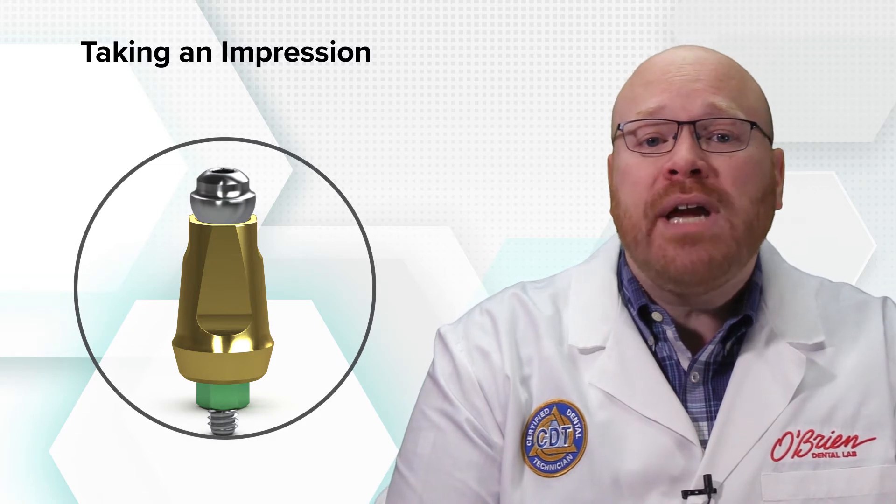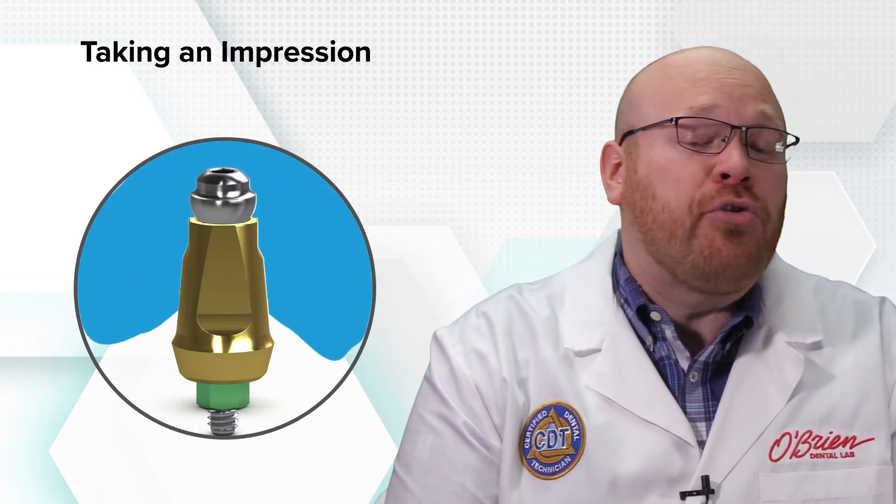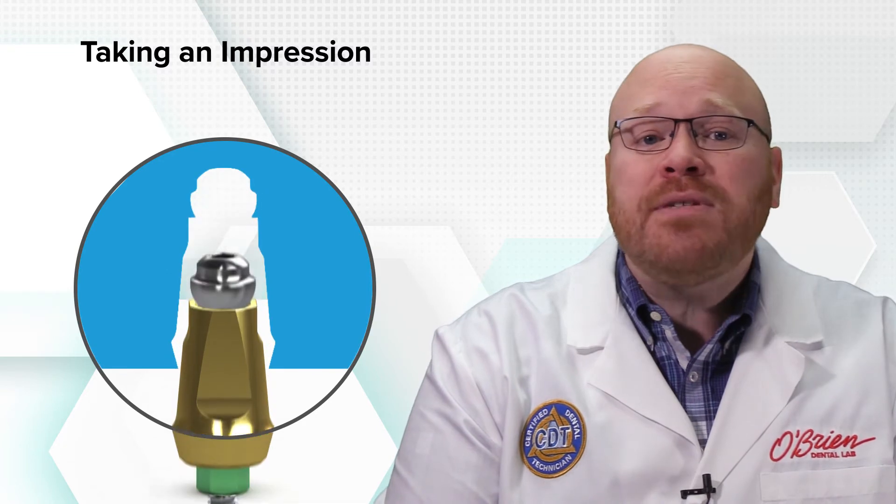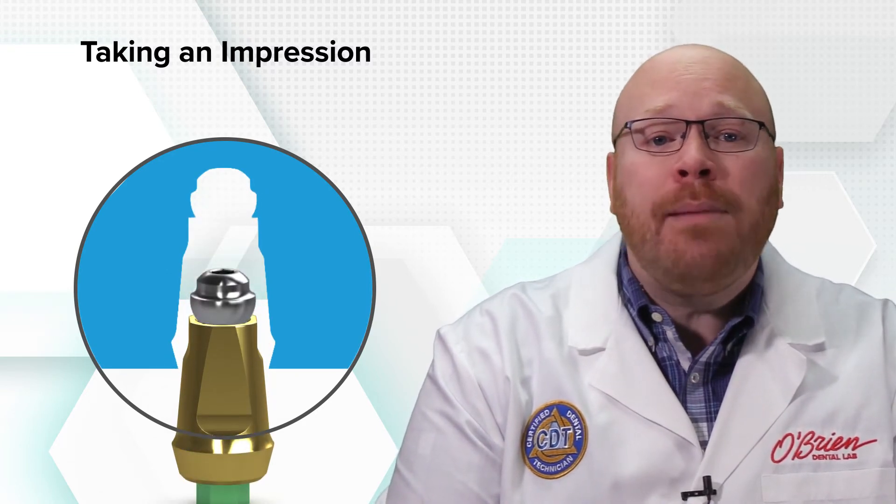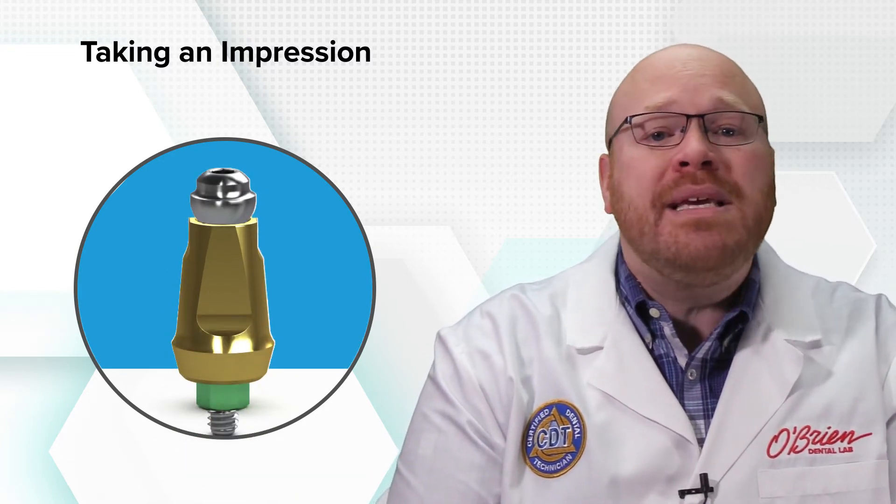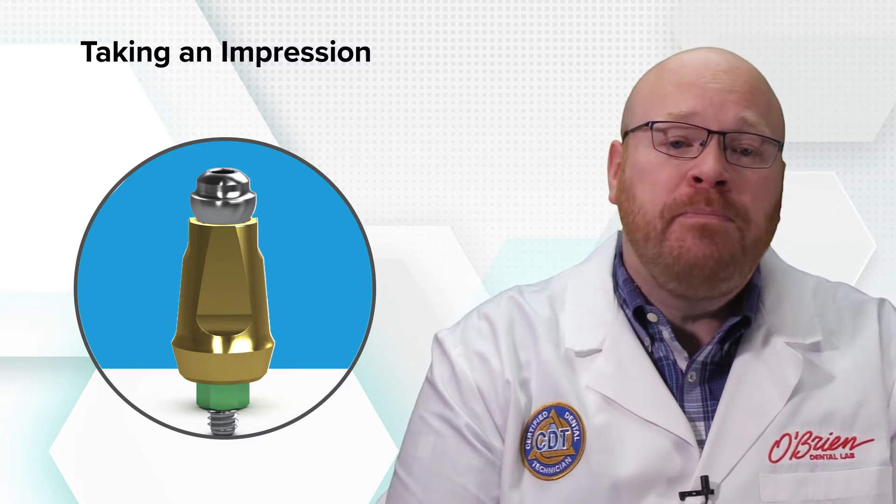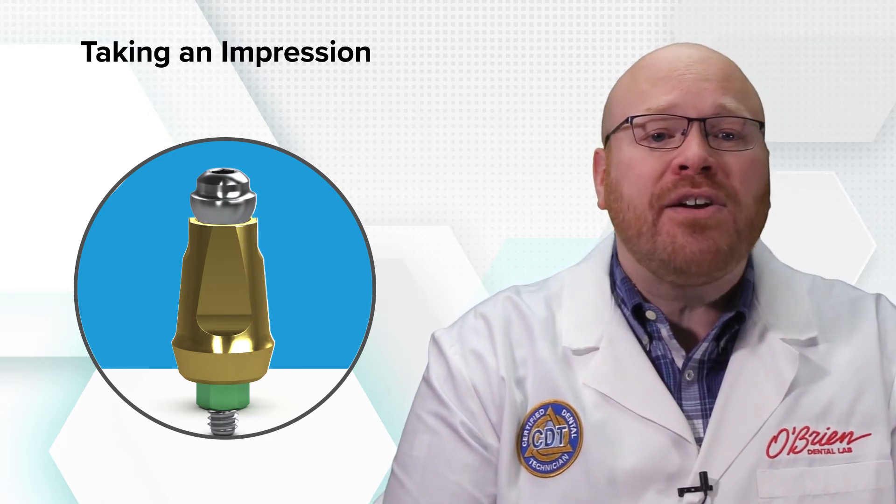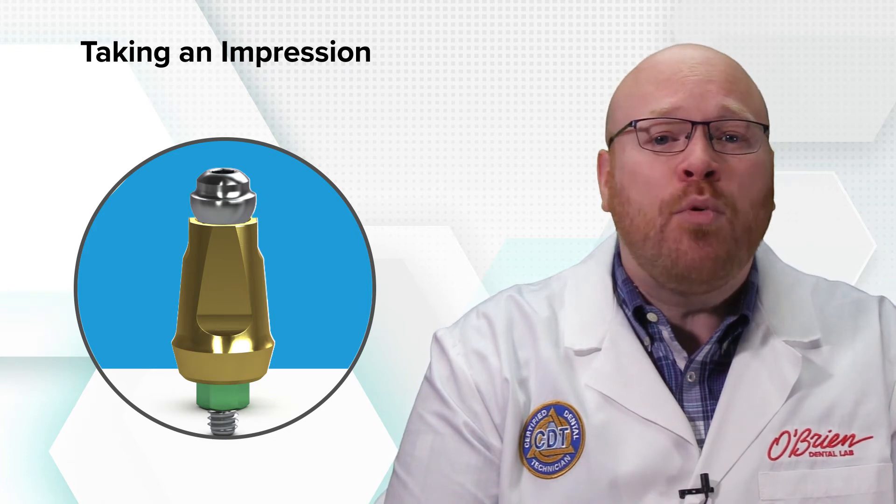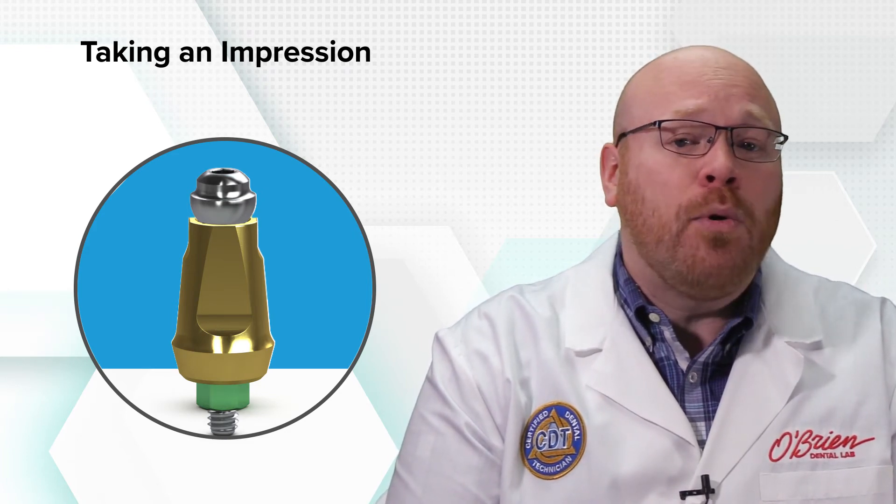This ball top creates an undercut so that the impression material flows into it and creates retention. This allows the abutment to snap into the impression, and more importantly, it prevents the abutment from easily sliding out of the impression. When the ball top isn't used, there is very little retention to hold the abutment in place, which makes it more likely for an inaccurate model to be poured.